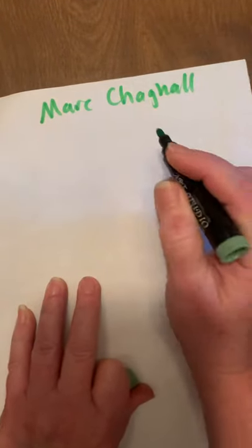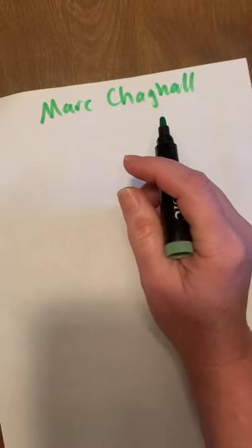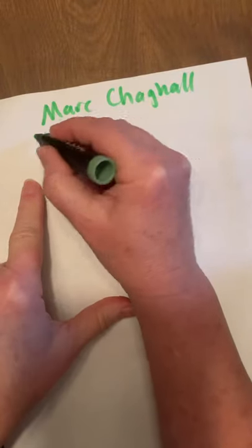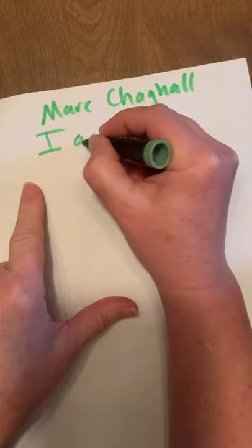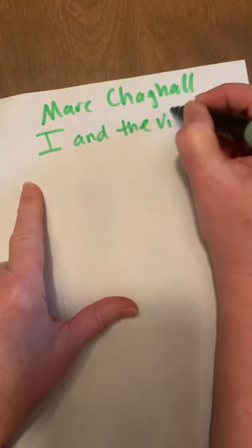I will send you an image of this artwork that we're going to be looking at, and it is called I and the Village. Marc Chagall was a Russian artist, and in Russia when he was growing up, he saw things in his life and he would make them in his art when he became an adult.